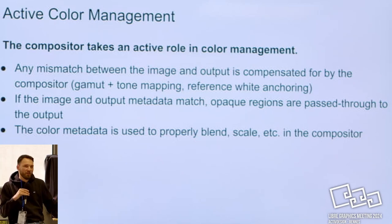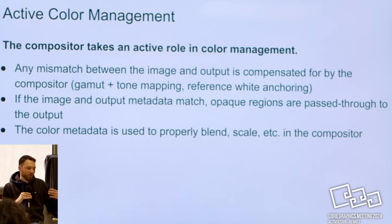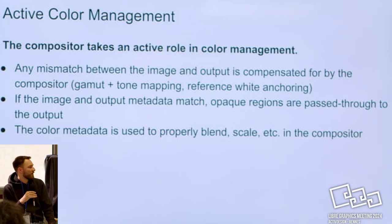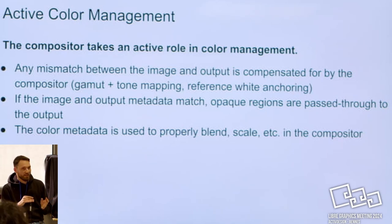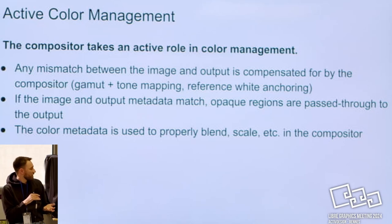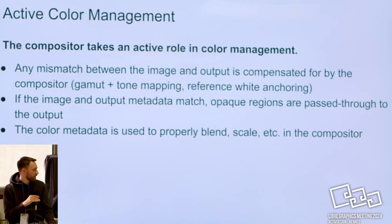The mismatch between everything is basically what we have to compensate for. The color properties we care about are the gamut, the tone — the dynamic range — in the image, and something like the reference white. This pass-through mode is what we want to achieve most of the time.